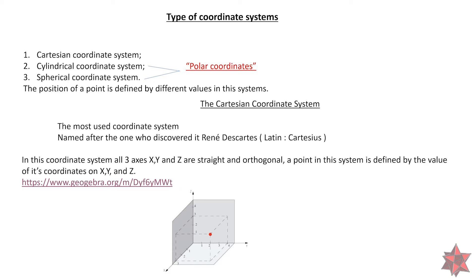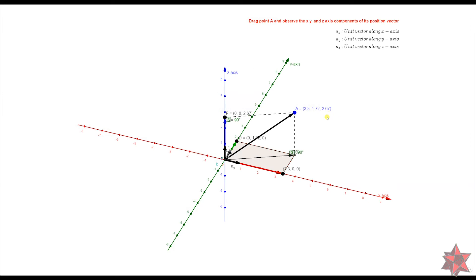The first and most used one is the Cartesian coordinate system, named after the one who discovered it — René Descartes, or in Latin, Cartesius. In this coordinate system all three axes X, Y, and Z are straight and orthogonal. A point in this system is defined by the value of its coordinates on the X, Y, and Z axes. I found a website that helps explain each system better — it's called geogebra.org. In this example of the Cartesian coordinate system, we have a point in space defined by the values from the X, Y, and Z axes.